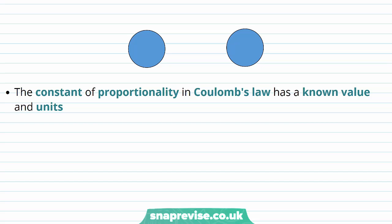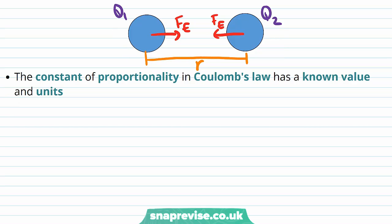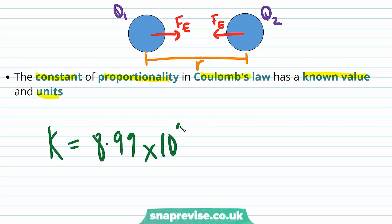We can illustrate it on two spheres that are charged. They will feel some force Fe between them, and they will be separated by a distance R, with charges Q1 and Q2. The constant of proportionality in Coulomb's law has a known value: it is equal to 8.99 times 10 to the 9 newton metres per coulomb squared.